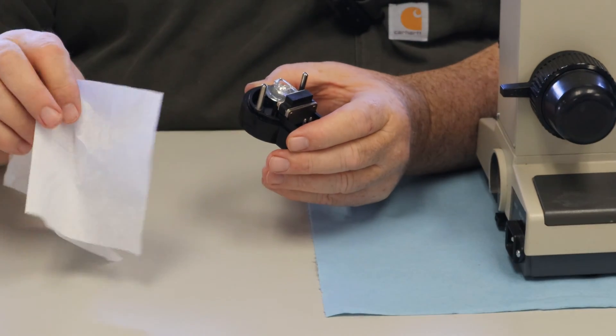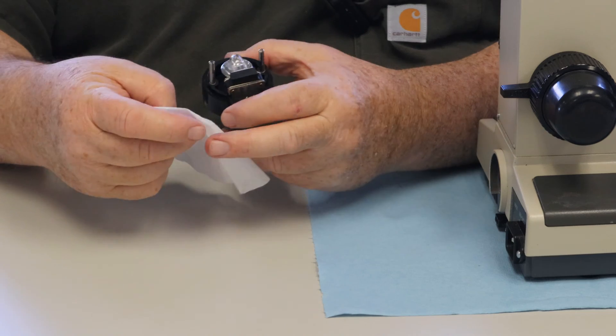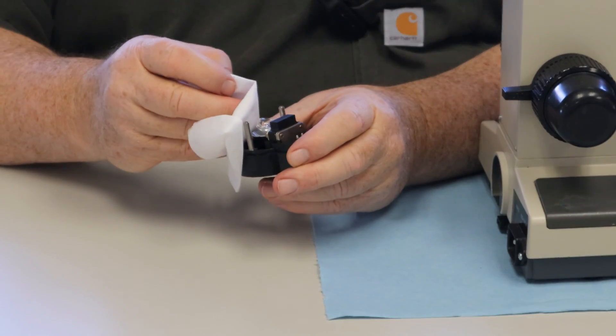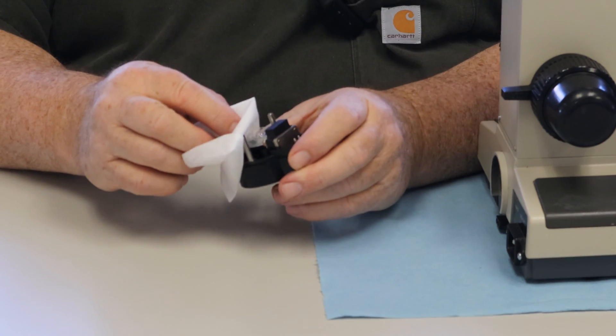Get a kim wipe or tissue of some sort. If you leave oily fingerprints on the bulb, it will burn into the bulb.